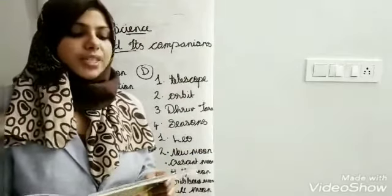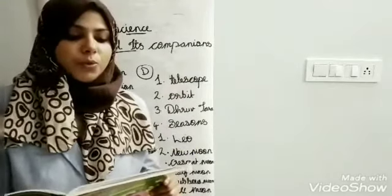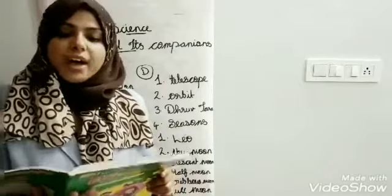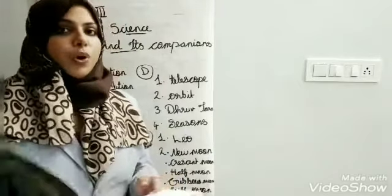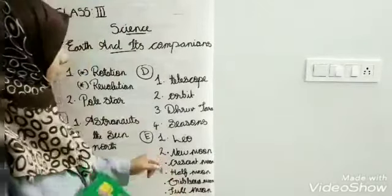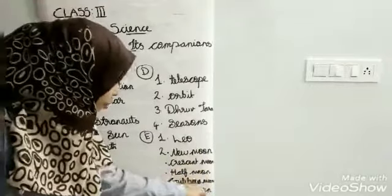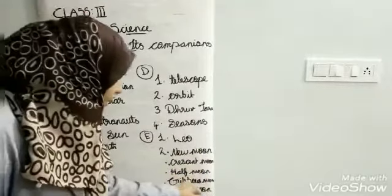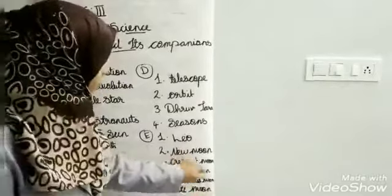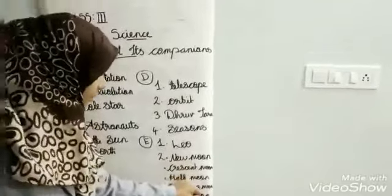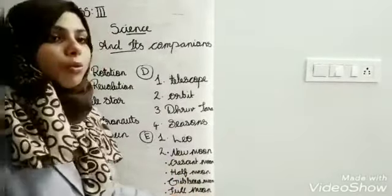Second question: write the names of the phases of the moon. The phases of the moon are: new moon, crescent moon, half moon, gibbous moon, and full moon.